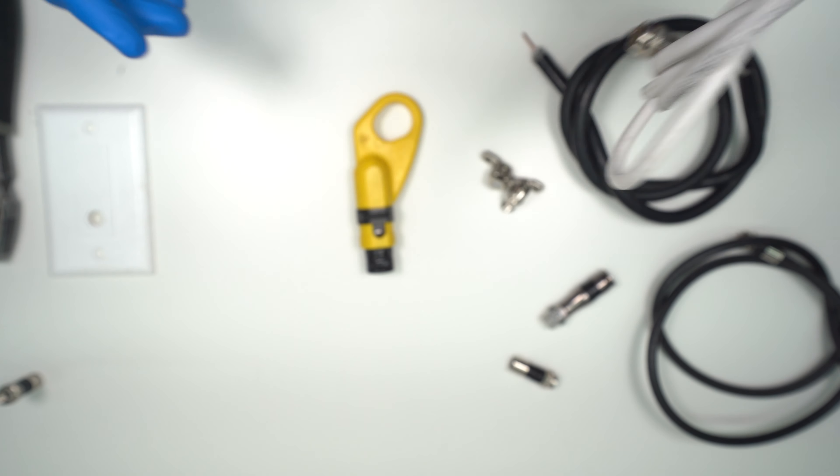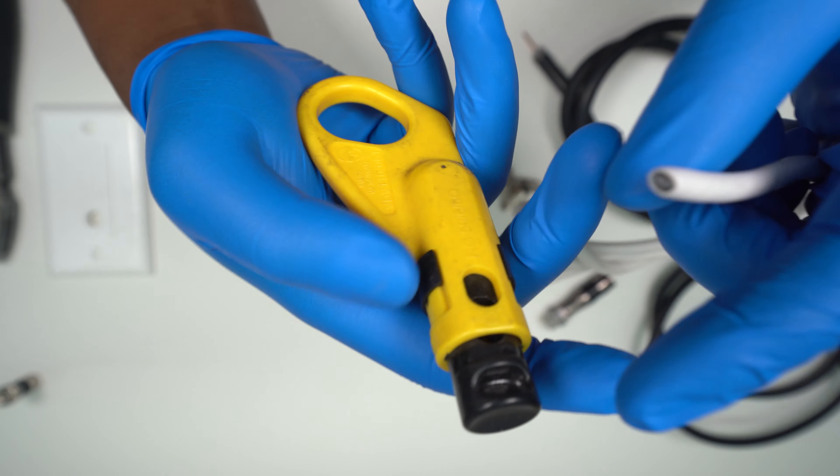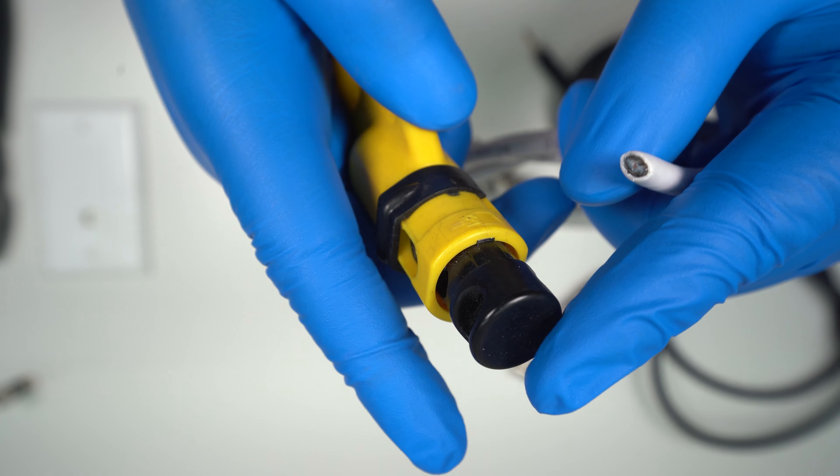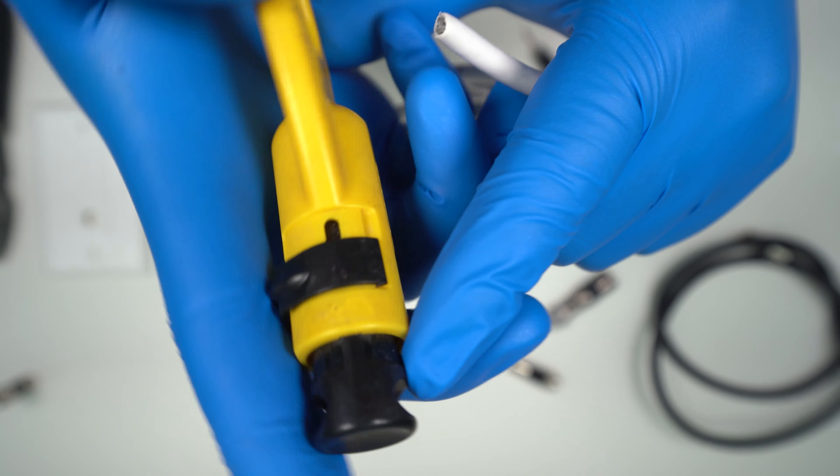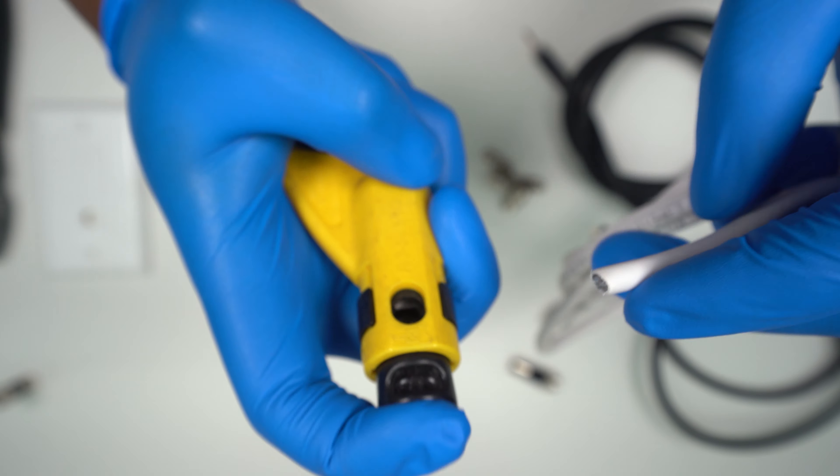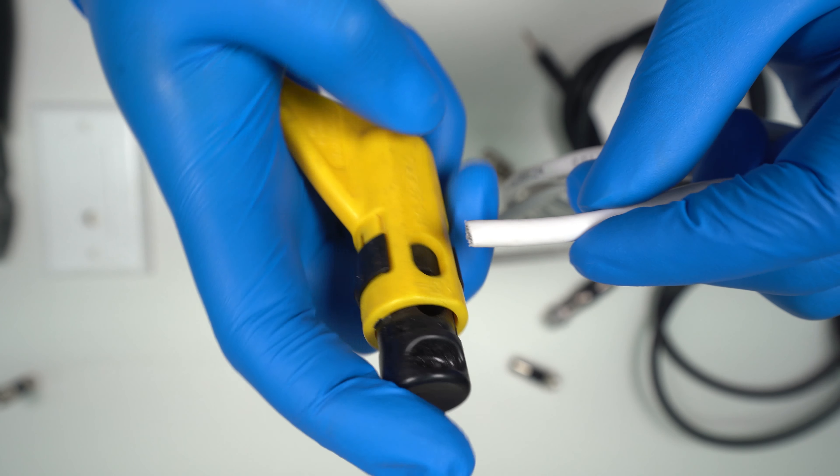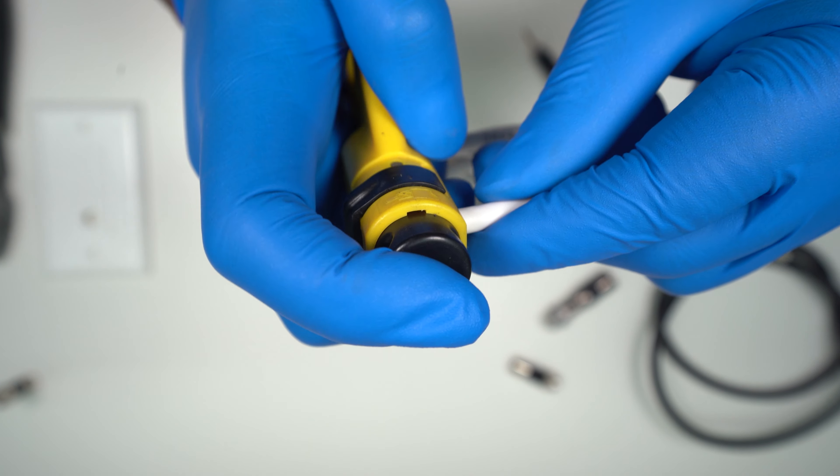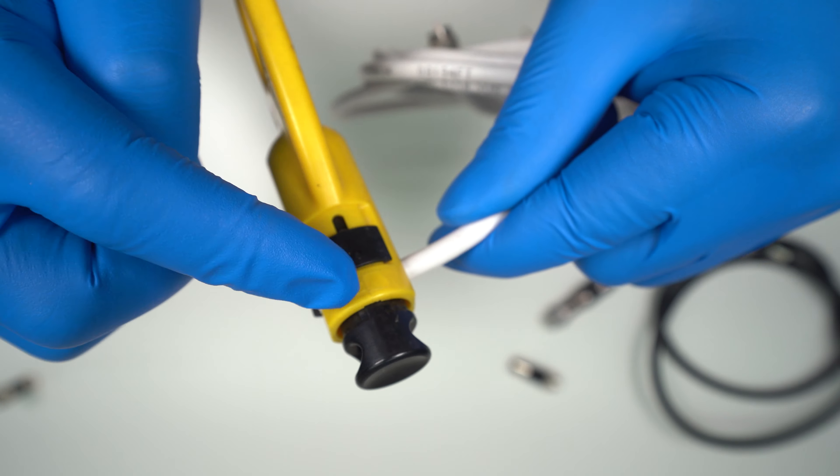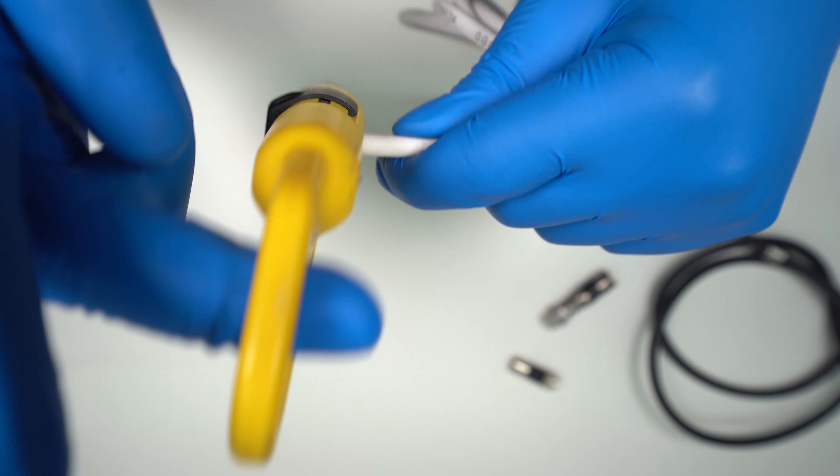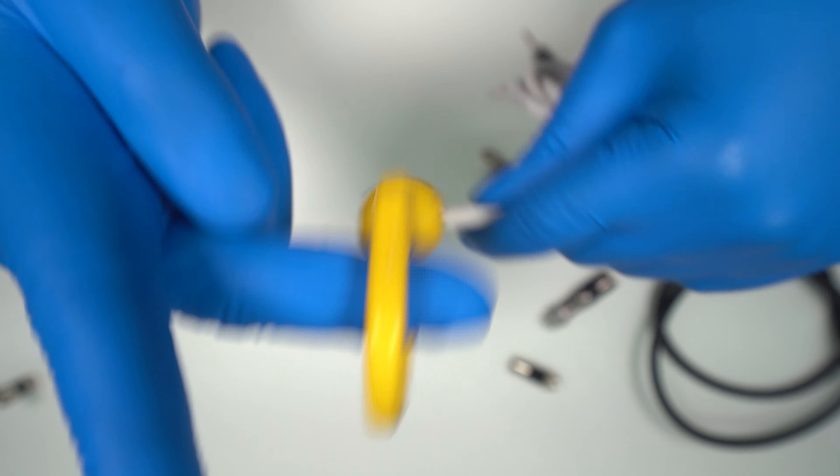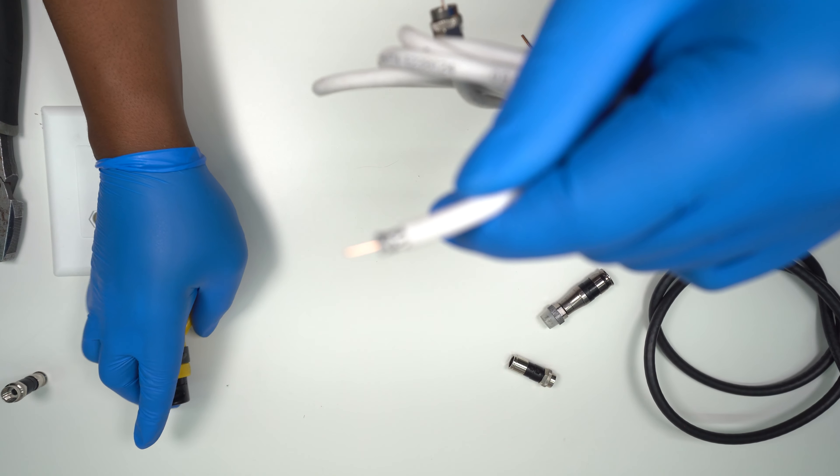First thing you're going to want to do is grab your stripper and just look at the markings. This one has special markings on it to tell you how to slide it in. You just want to push this clip up just so you can get a perfect cut. So you just slide it in, pull this pin or push down on this pin, and then once it's seated you just spin it around a couple times and you pull on it.